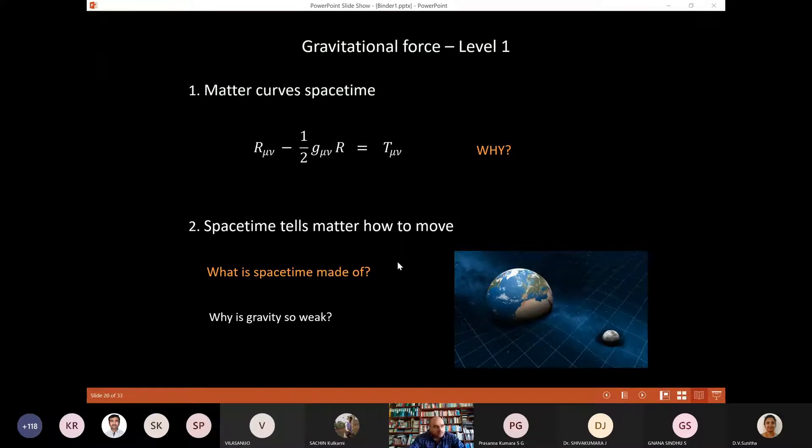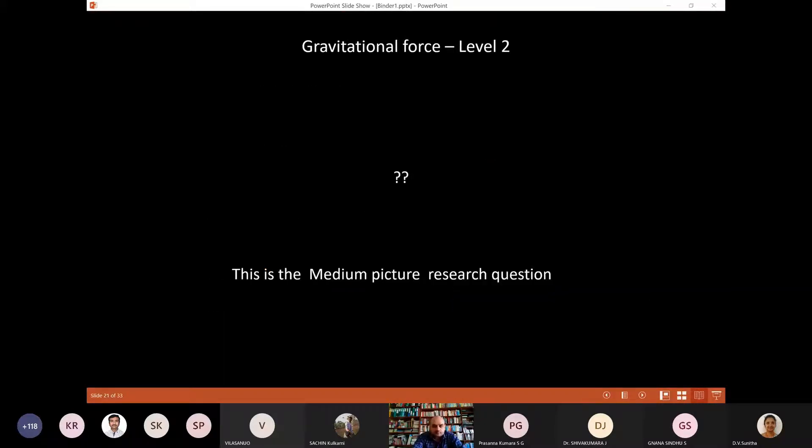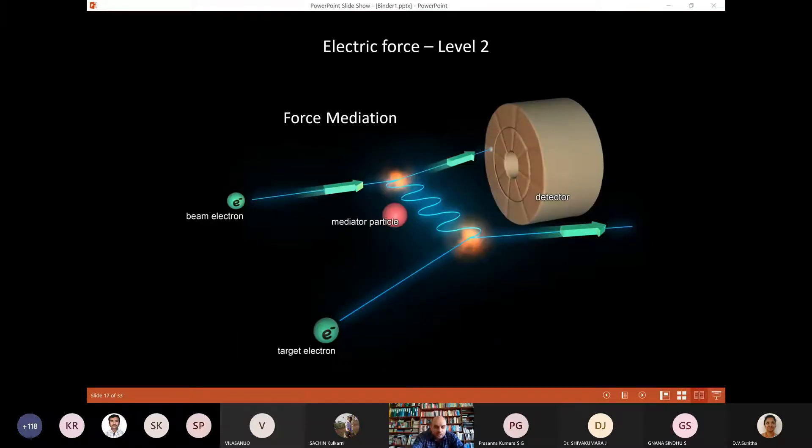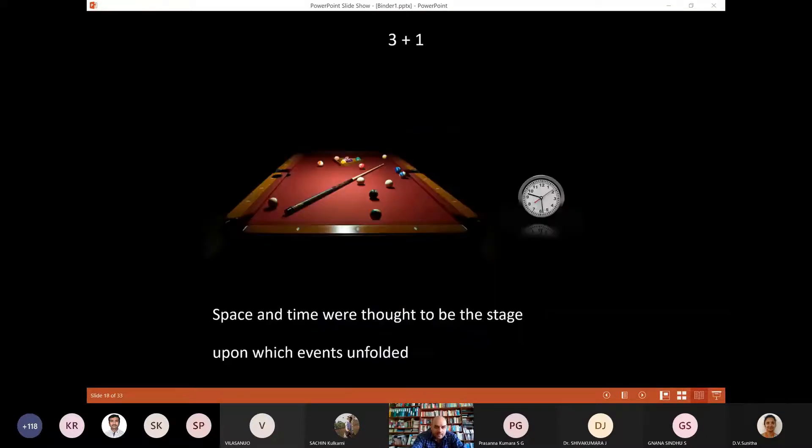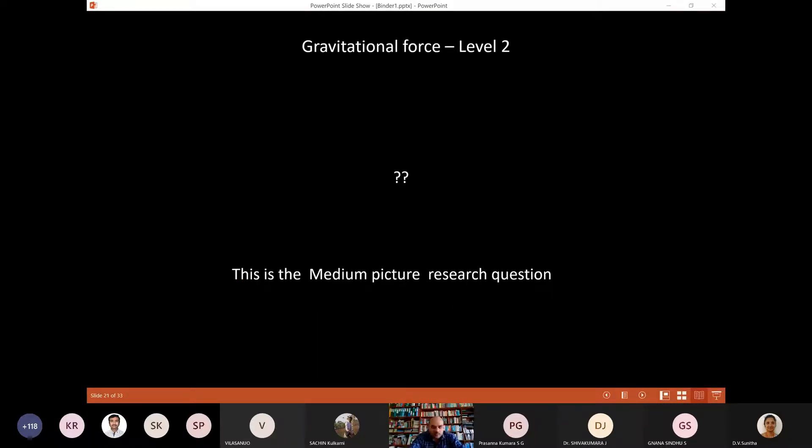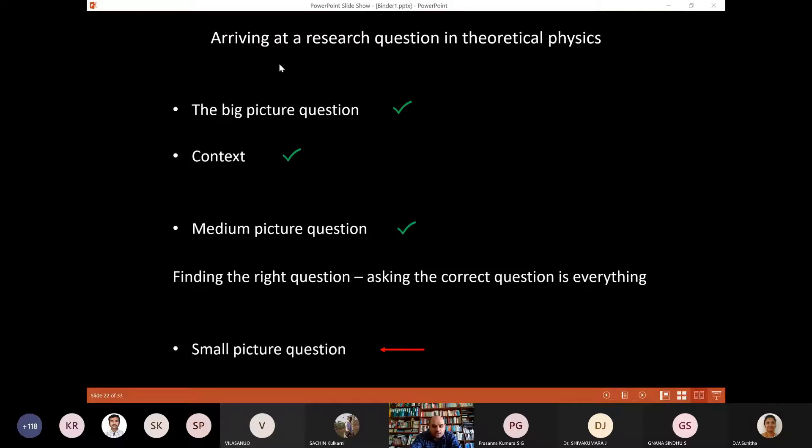So at level one, these are the two questions we don't understand. Why does matter curve spacetime and what is spacetime made of? Now, let me not give you the wrong picture because the general theory of relativity works beautifully. So if you assume this equation, you assume matter curves spacetime, then you can calculate how things move very nice. So let me go back to electricity. So electricity after the field lines, we had this nice level two picture, which is our current understanding. What is our understanding at this level of gravity? In other words, how do we answer these two unresolved questions in general relativity? The answer is we don't, we don't have an answer to this. So this is the medium picture research question. What is the picture like the electric force that explains how the gravitational force works? And I don't have an answer to that, but that is my medium picture research question.